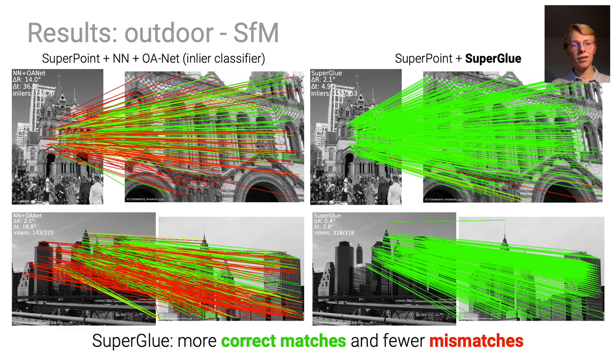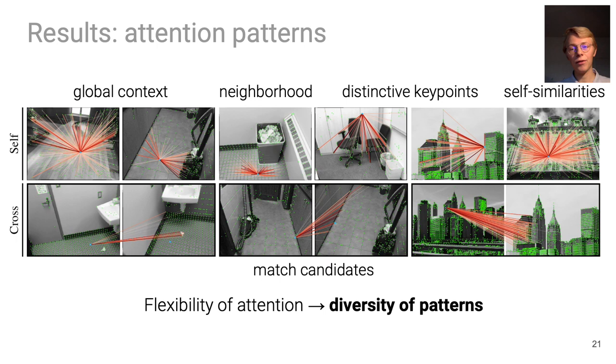One can also visualize the attention weights at different layers, making SuperGlue interpretable. The flexibility of the attention mechanism enables a wide diversity of patterns from global context to local neighborhoods.